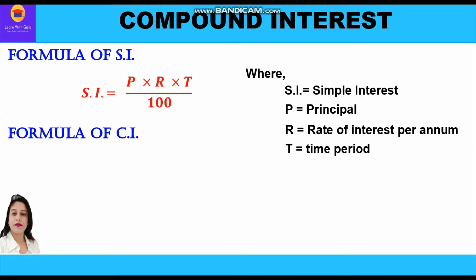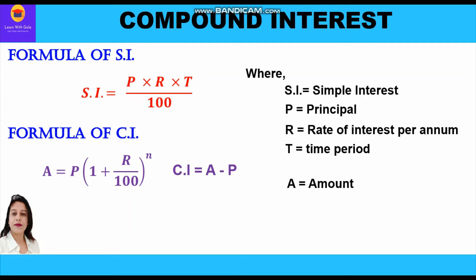To calculate compound interest we have two methods: either we can calculate the amount first and then use the compound interest formula, or we can use the CI formula directly. The amount formula is A = P × (1 + R/100)^n, followed by CI = A − P.